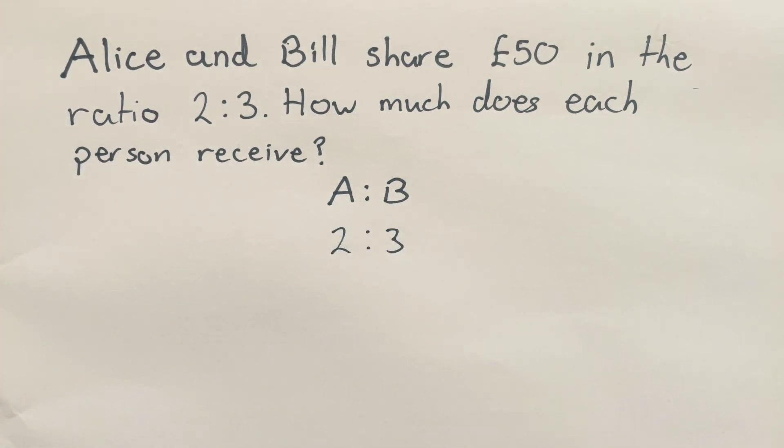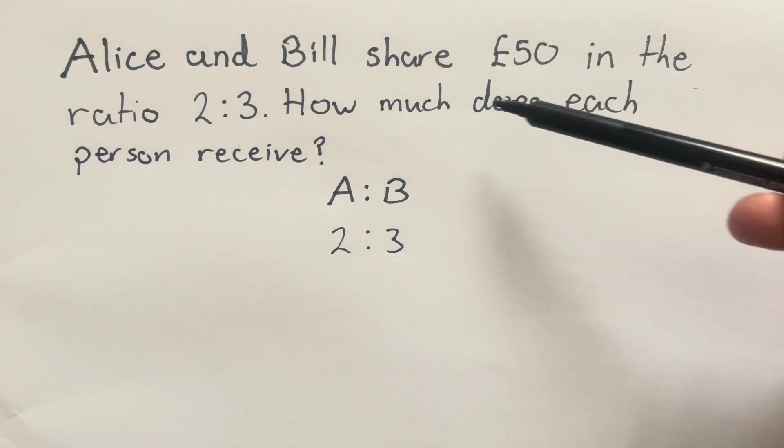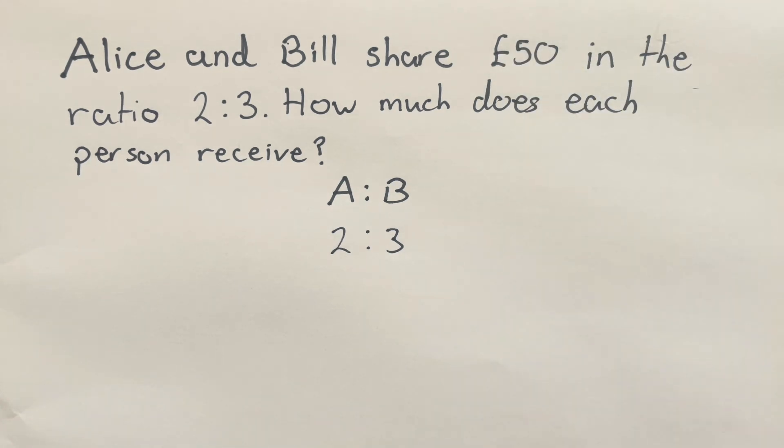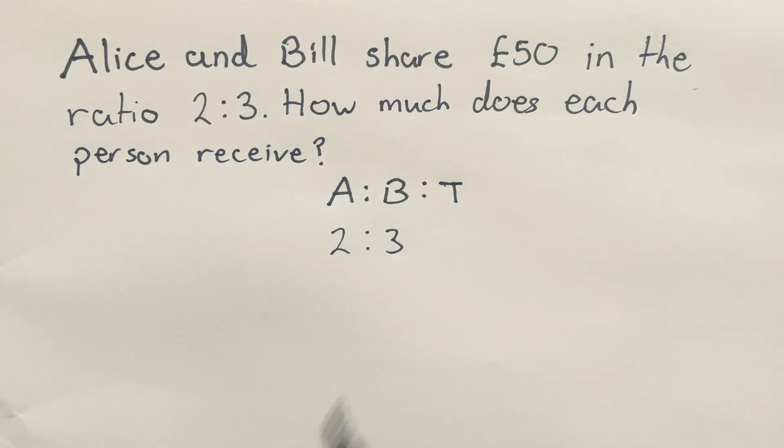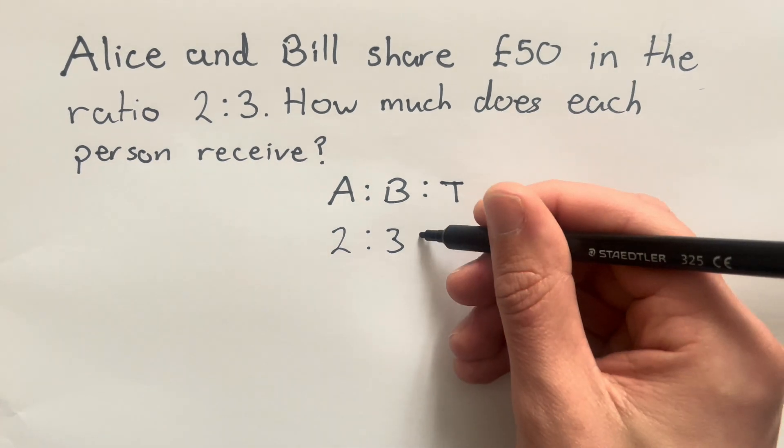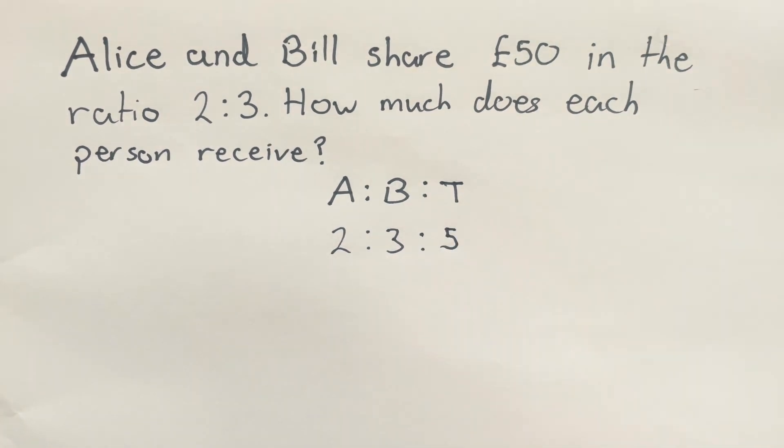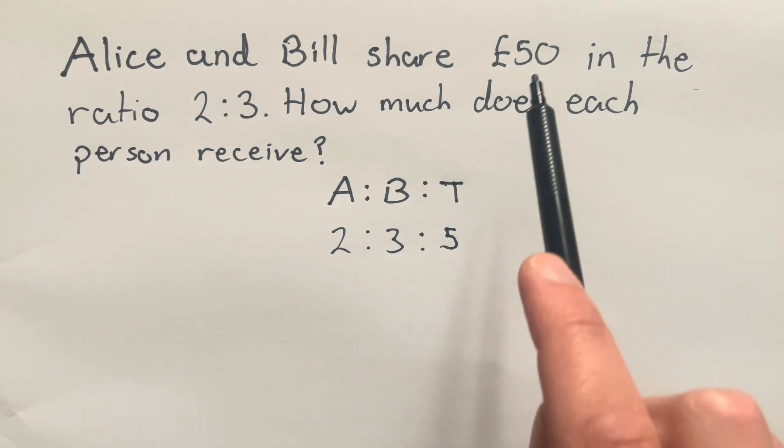Now since we're working with a total amount of money that we're sharing, I am going to add an extra part to my ratio which I'm going to label T. That T is for total. Now the total in this ratio here I get by adding the two parts together. Two add three gives us five. But the actual total, the amount of money that they share, is £50.